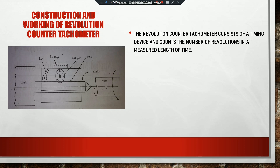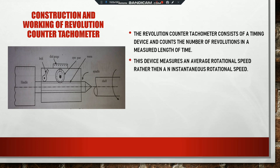The timing device is like a stopwatch. We need a stopwatch to measure the RPM of the shaft — you start and stop it for one minute, and the number of revolutions shown on the dial gauge gives us the revolutions per minute. This device measures the average rotational speed rather than an instantaneous rotational speed.